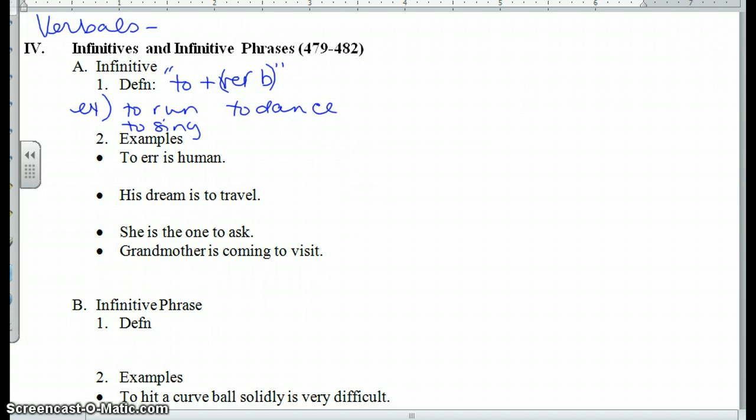Now the job of an infinitive, what does it do in the sentence? It can act like an adjective, an adverb, or a noun. The noun is a tough one because if it can do a noun job, that means it can be the subject, the object of a preposition, a predicate nominative, a direct object, or an indirect object. It can do all of those jobs that a noun could do in a sentence.